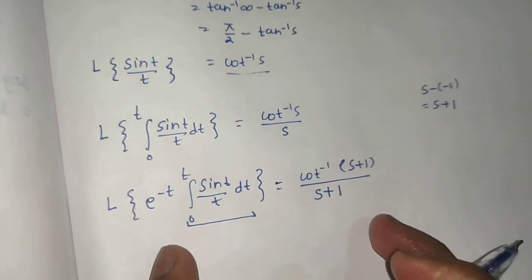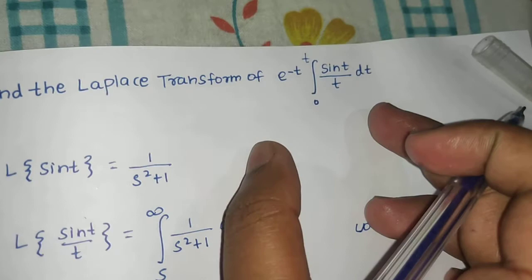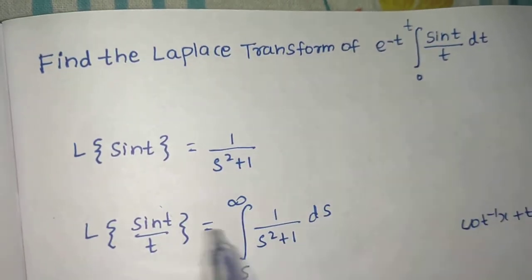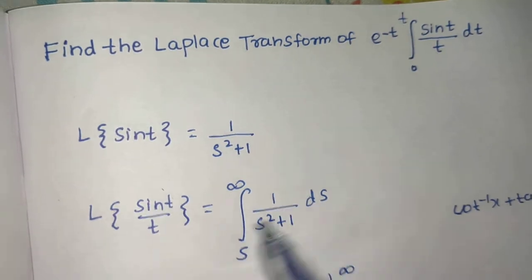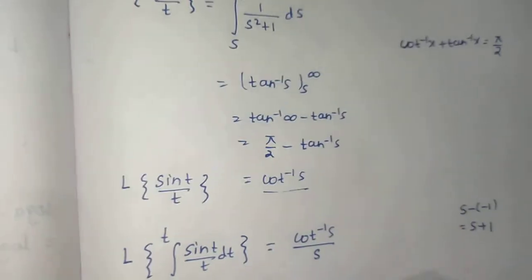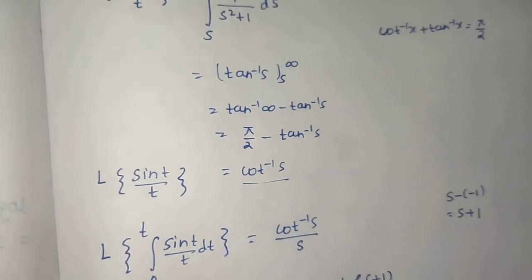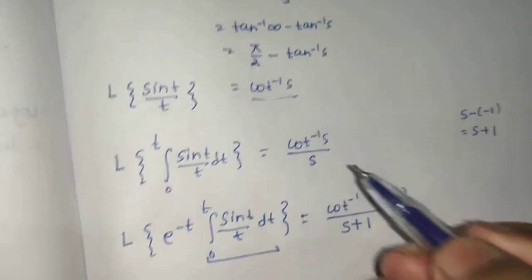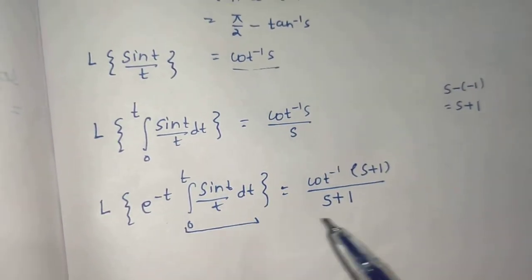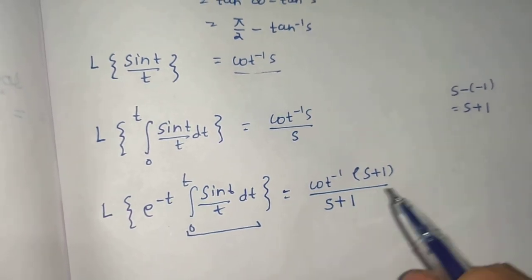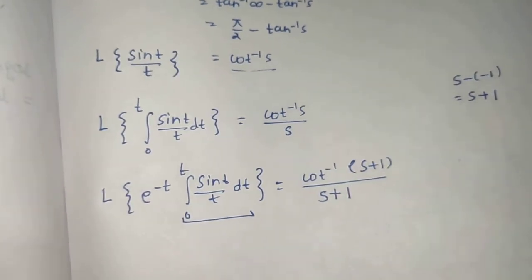We have reached what we were looking for just by doing it in bits and pieces. First the Laplace of sin t, then the division by t property, done. Simple integral and trigonometry. Then we found the Laplace of integral which says simply divide by s. Then the first shift which says replace s by s - a.